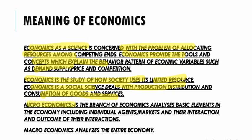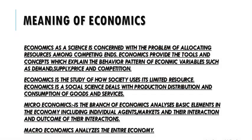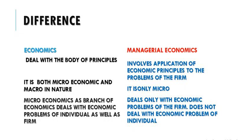Economics is of two types. Microeconomics deals at the smaller level — it is that branch of economics which analyzes the basic elements in the economy, including individual agents, markets, and their interaction with the environment and the outcomes of those interactions. Macroeconomics deals with the entire economy: it studies national income, aggregate consumption, aggregate saving, aggregate investment, and unemployment which exists across the entire economy.